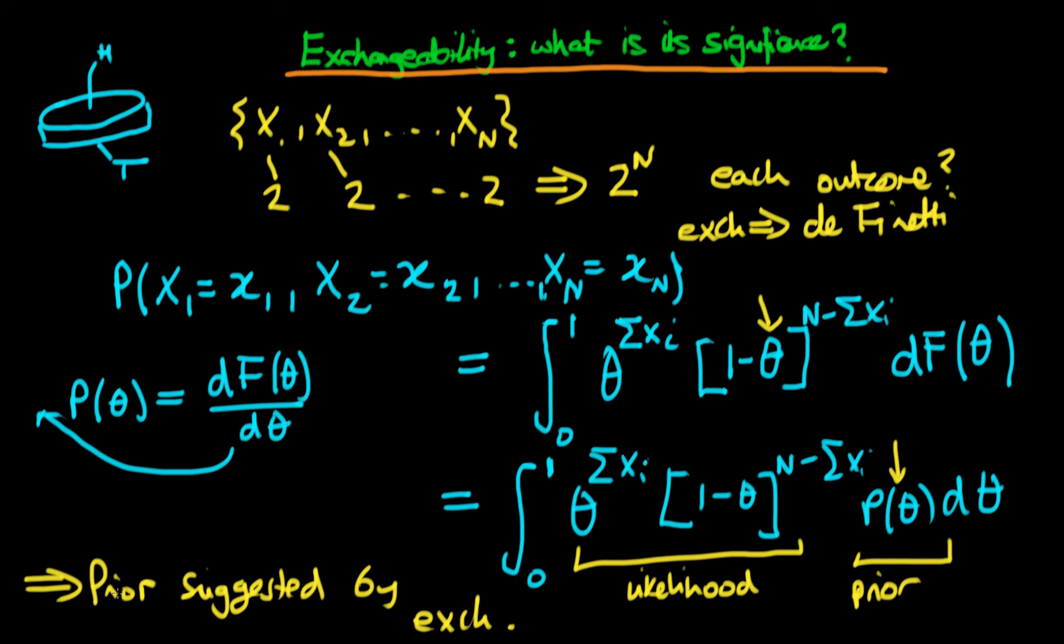And that's purely because of the fact that De Finetti's representation theorem says that in this circumstance where we have exchangeable data, this is equivalent, where we can write down the joint probability distribution as an integral here whereby we are weighting each individual likelihood by a particular prior value of theta.